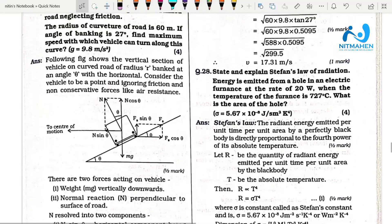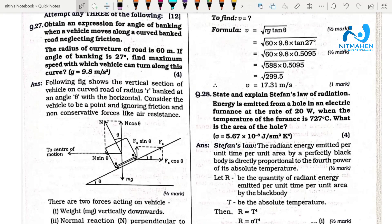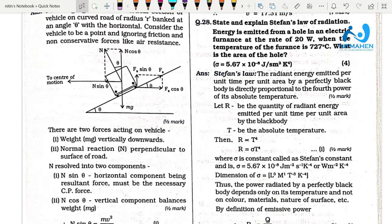Explain Stefan's law of radiation. The rate R is directly proportional to the fourth power of T, with Stefan-Boltzmann constant. Explain with units and dimensions.